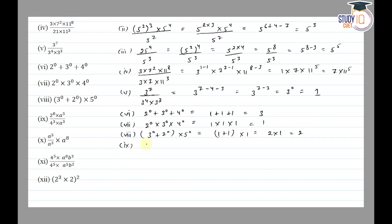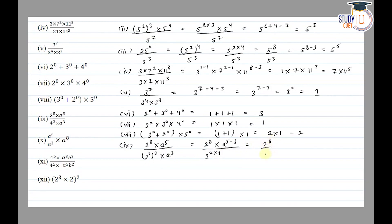The ninth part is: 2 raised to the power 8 into a raised to the power 5, upon 4 raised to the power 3. We rewrite 4 as 2 square, so 4 raised to power 3 becomes 2 raised to power 6. Base is the same, so powers subtract: 2 raised to power 8 minus 6, into a squared. Since a raised to power 5 minus 3 gives a squared, the answer is 2 squared into a squared.